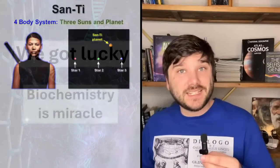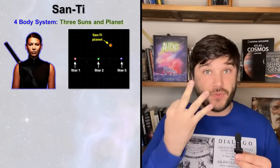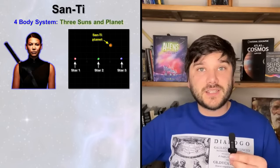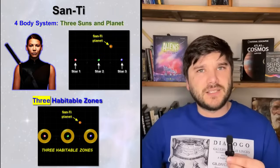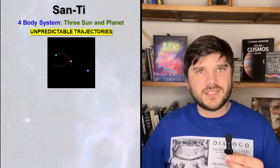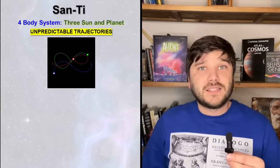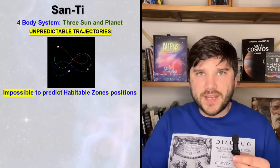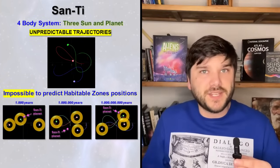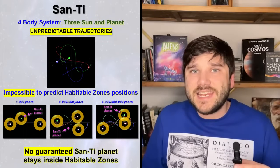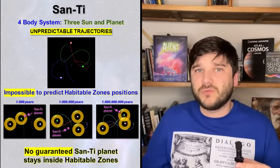Moving to the San-Ti civilization, let's remember, they live in a 4-body system: 3 stars and San-Ti planet. 3-star system implies there are the 3 habitable zones. But the trajectories of the 3 stars and San-Ti planets are unpredictable because this is 4-body problem. Therefore, it is impossible to predict the configuration of habitable zone in 1000, 1 million, or 1 billion years. And of course, there is no guarantee that the San-Ti planet will be staying inside of the habitable zone of one of the stars.